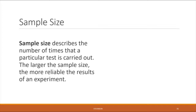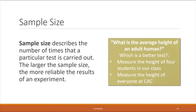One final aspect of experimentation is sample size — the number of times a specific test is carried out. In general, the larger the sample size, the more reliable the results. For example, if you want to know the average height of an adult human, measuring four students in class could be skewed if those students happen to be very short or very tall. Measuring the height of everyone at CAC gives you a larger sample size and a more accurate depiction of the true answer.